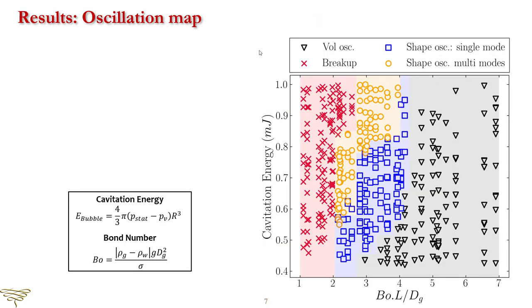Now we jump to the results section. We conducted a parameter study by varying the air bubble size, cavitation generation delay, and laser power, thus elucidating the influence of cavitation energy, relative distance, and bond number on the air bubble final oscillation regime. This plot illustrates the air bubble oscillation regime map based on the induced cavitation energy and a modified bond number that includes the distance between the air bubble and cavitation bubble. At high bond number, the air bubble is stiffer, meaning it needs more energy for the formation and transition to another oscillation regime. Also, the air bubble is further from the acoustic source, so the excitation energy at the air bubble location is not high enough to cause a transition to shape oscillation.